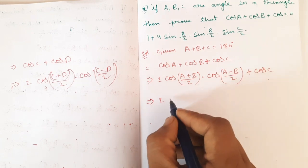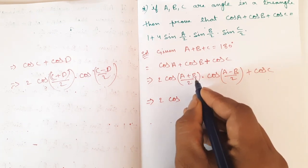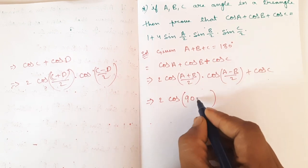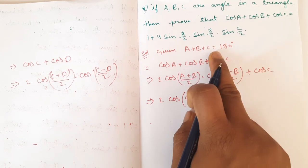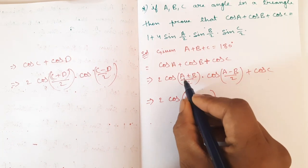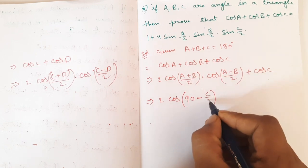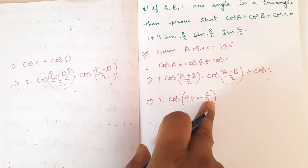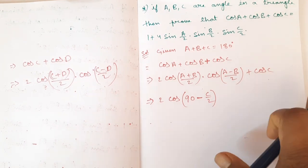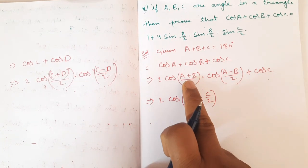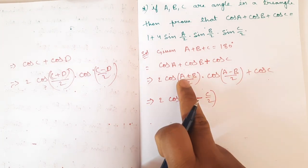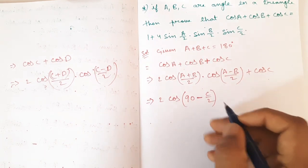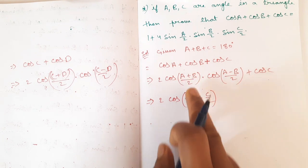Here, cos of (A+B)/2. Since A plus B plus C equals 180, we have A plus B equals 180 minus C, so (A+B)/2 equals 90 minus C/2. Therefore cos((A+B)/2) becomes cos(90 − C/2).